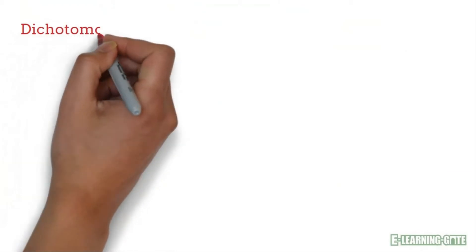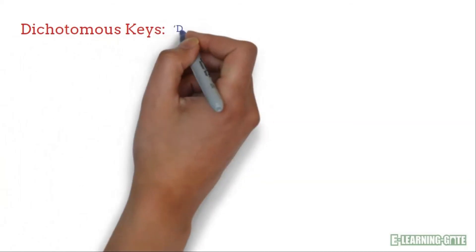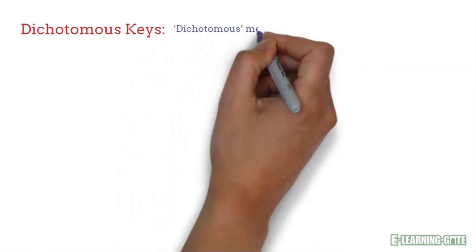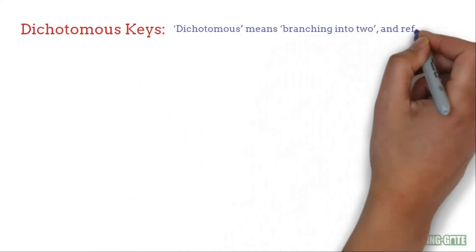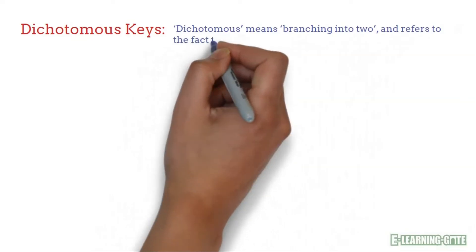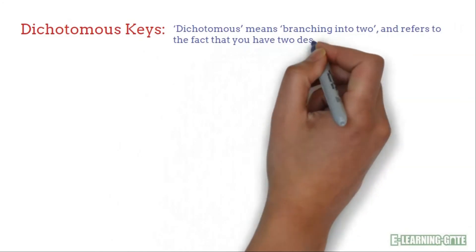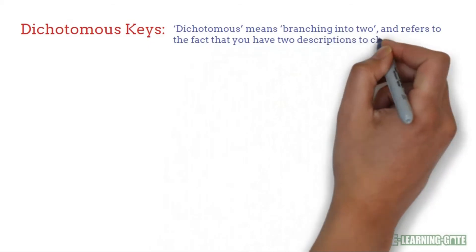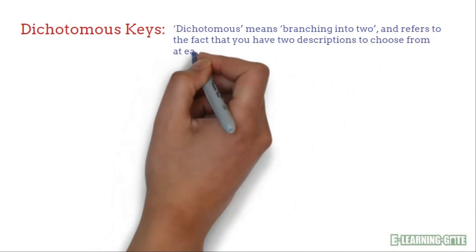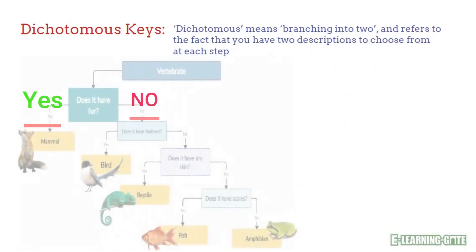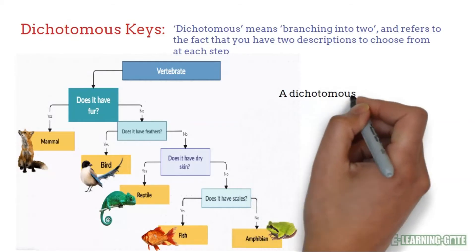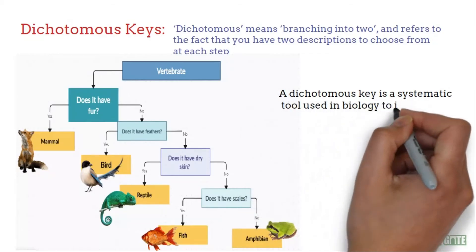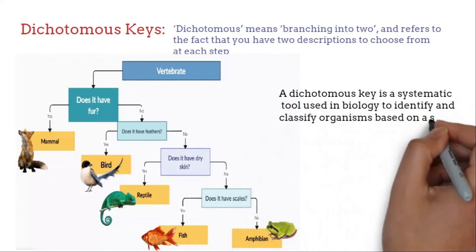Now let us understand dichotomous keys. Dichotomous means branching into two, referring to the fact that you have two descriptions to choose from at each step. A dichotomous key is a tool that uses a series of yes-or-no questions, statements, or descriptions ordered in pairs in order to identify a specimen within a defined group of specimens.